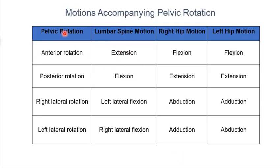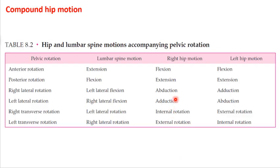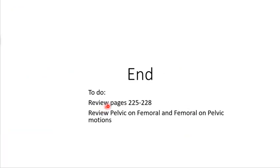Here's that chart — here are your pelvic motions, and then here are the coupled spine movements and the coupled hip movements, assuming that both feet are on the ground. It's the one from your book. That's it for this lecture — make sure you're reviewing pages 225 and 228 from the textbook, and definitely review the pelvic and femoral motions. More importantly, look at how they're coupled with the lumbopelvic complex.